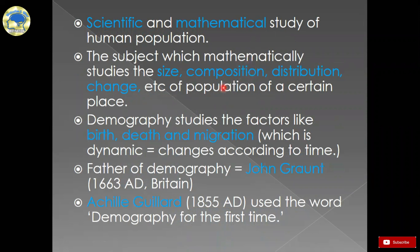Demography studies about the size of population and composition of population according to age, sex, language, religion, ethnic groups, etc. It also studies about the distribution of population according to different places and different political divisions of the country. It also talks about the population change of a certain place at a certain time. It studies about birth, death and migration, which are called the determining factors of population change. Population is a dynamic thing which never remains constant — it changes according to time, place and situation.